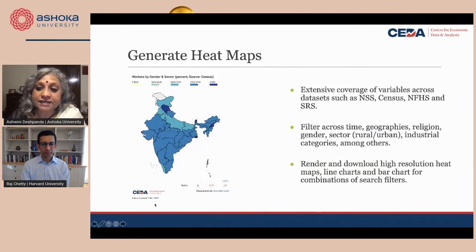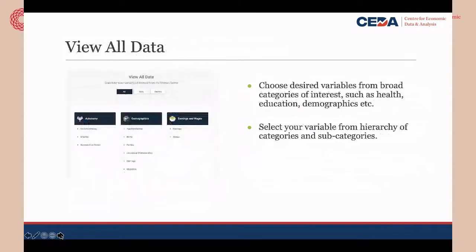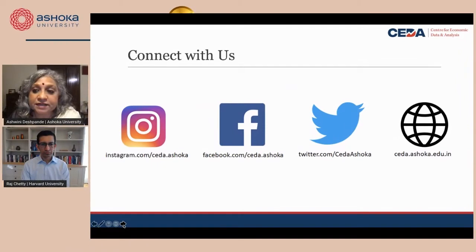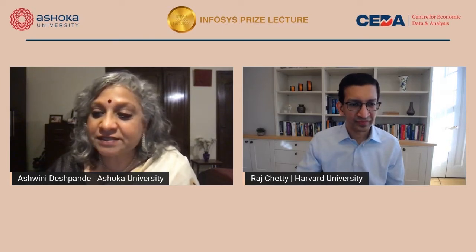For example, you can make heat maps using NSS, census, NFHS, and other data sources. You can filter across time, geography, and compare variables by generating heat maps at the district level or state level. The Opportunity Atlas that Raj Chetty and his colleagues established is what we want to be when we grow up. Today is the birth of the CEDA data portal — a baby step, but we are inspired by the Opportunity Atlas. Please type your questions in the chat box, and I will read them out to Professor Chetty at the end. The floor is yours.